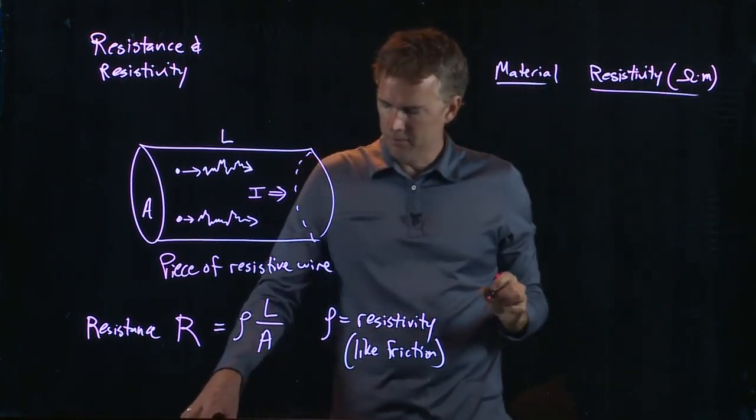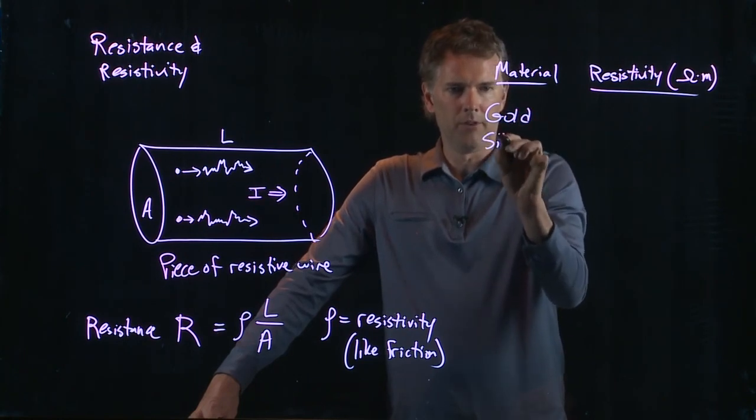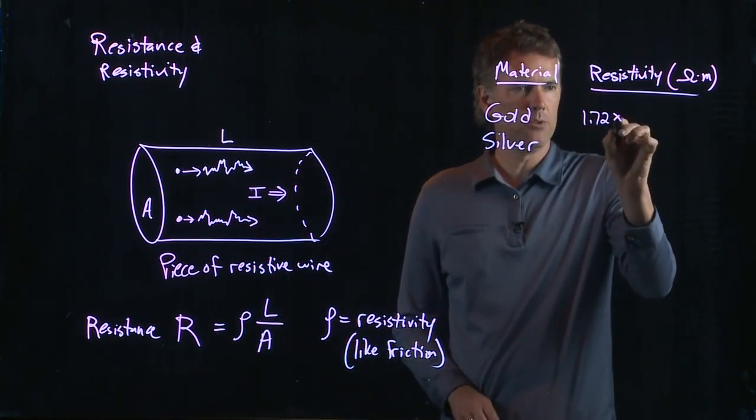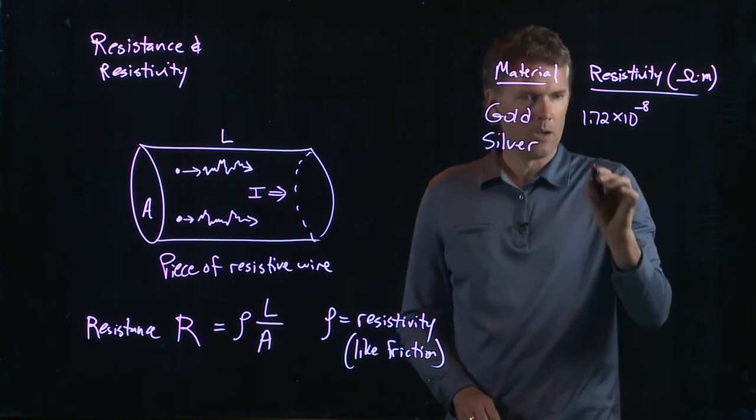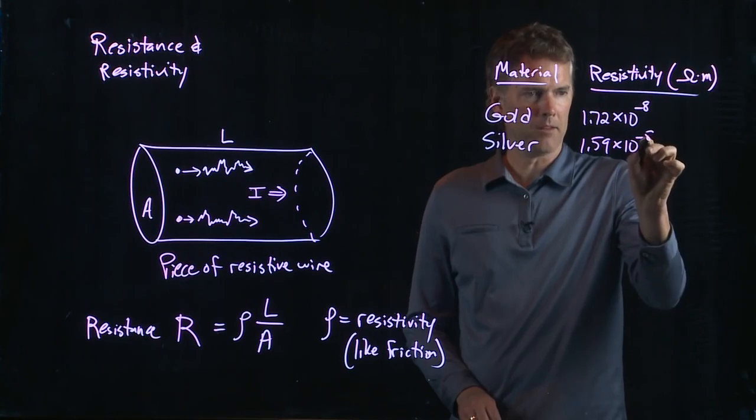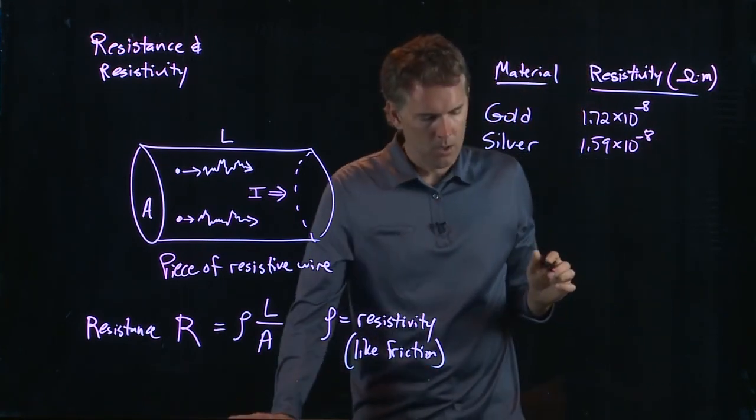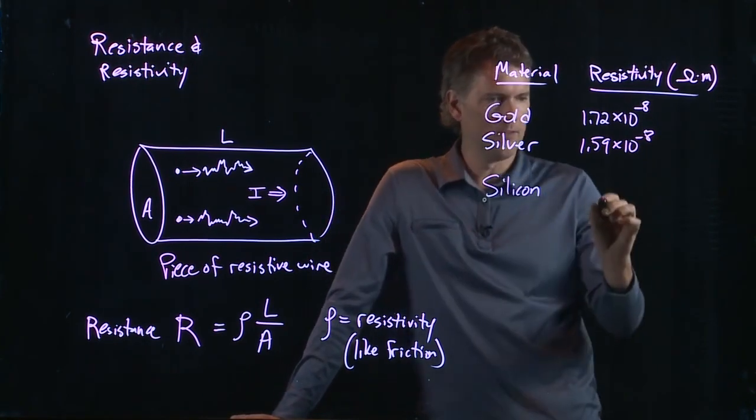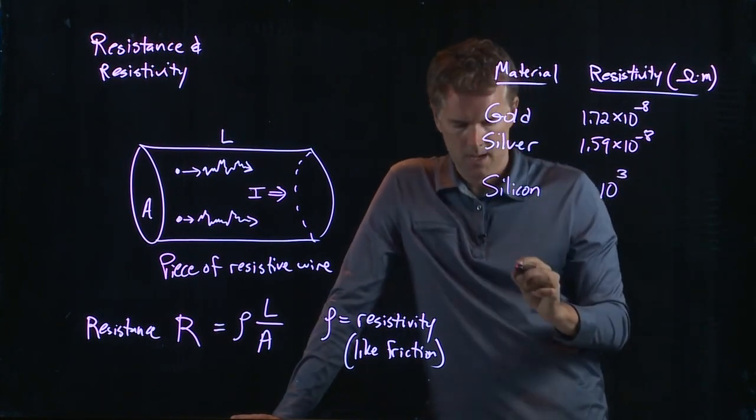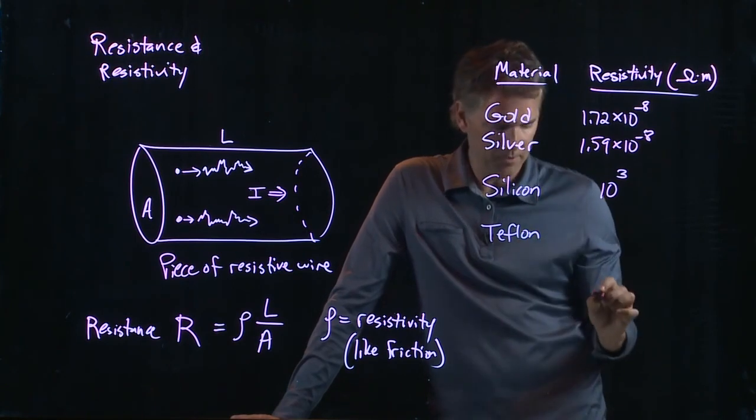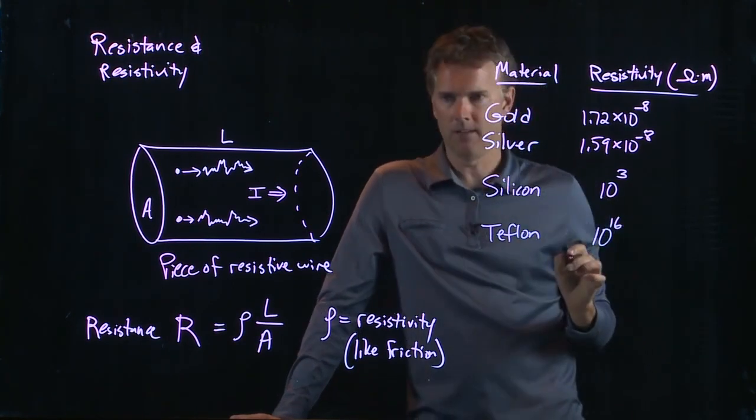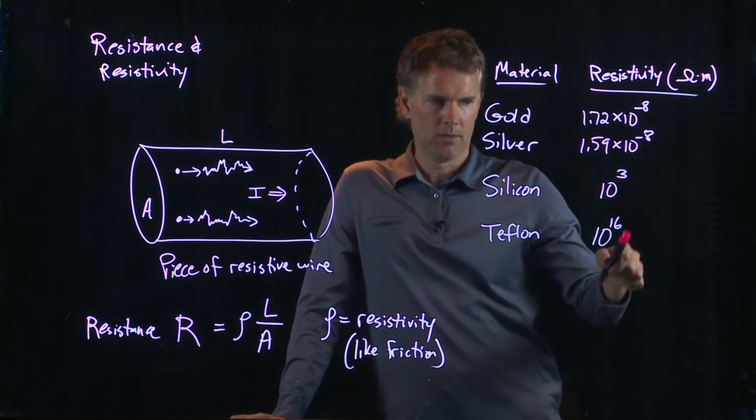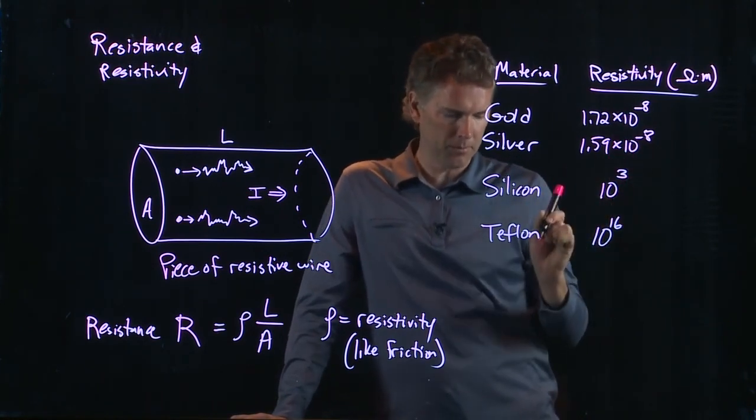So, for instance, gold and silver have a resistivity of the following. 1.72 times 10 to the minus 8, or 1.59 times 10 to the minus 8. Whereas something like silicon has a resistivity of 10 to the 3. And Teflon has a resistivity of 10 to the 16. 10 to the minus 8 up to 10 to the 16, that's a lot. That's 24 orders of magnitude difference between those two.